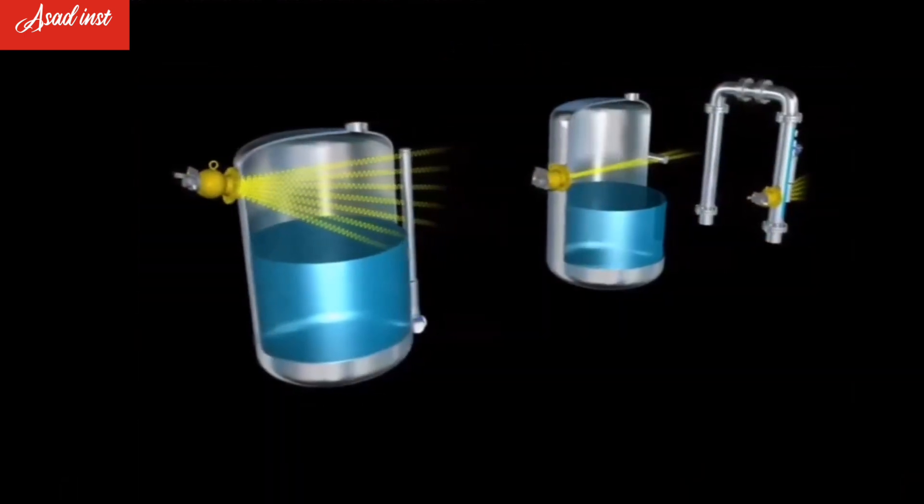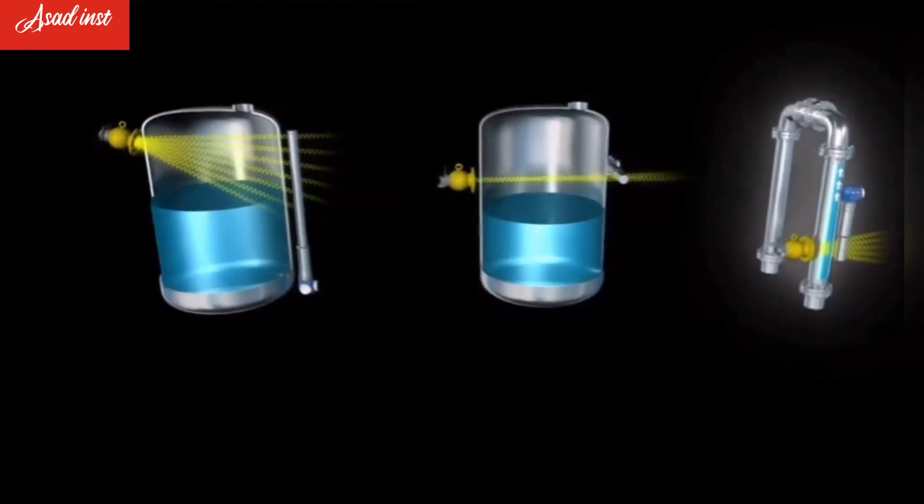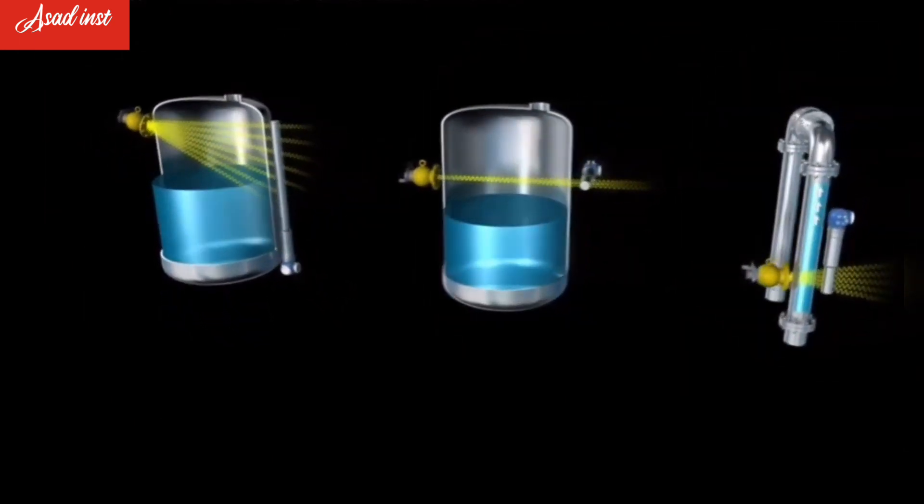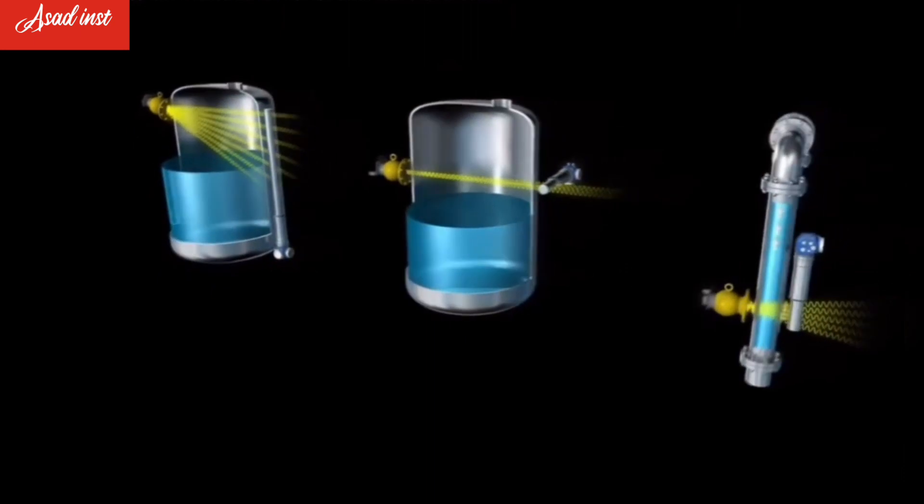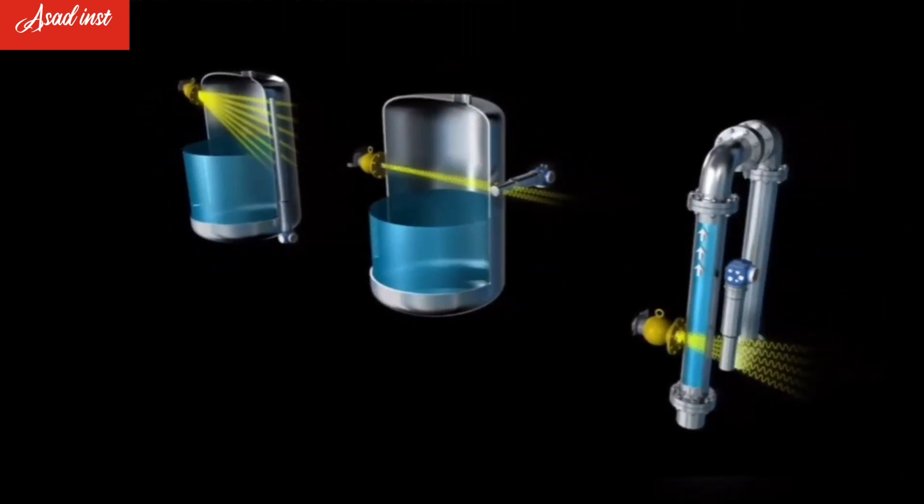Radiometric instrumentation can be used to detect continuous level, point level, or density in tanks or pipes. This is usually done by gamma radiation. Let's have a closer look at how this measurement method works. As a radioactive isotope decays, radiation is emitted in form of particles or electromagnetic waves.